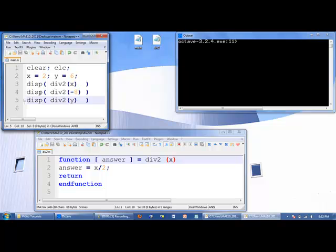Let's come down to the next line. Display div2 negative 8. The value negative 8 is passed down to x here in the function. Negative 8 divided by 2 is negative 4. That is returned as output to the main program. So the next thing that should be displayed is negative 4.